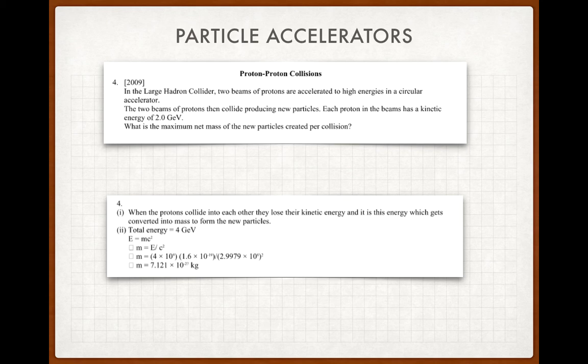So if we look at part two, the second line is E equals mc squared, the third line it's rearranged, and then to get the mass, we multiply the four gigaelectron volts by the charge of the electron, that's four by ten to the nine multiplied by 1.6 by ten to the minus 19, divided by c squared to get the mass of the new particles created. And that could be any number of particles, it might be one particle, it might be multiple particles, we don't have enough information to make a determination of that yet.